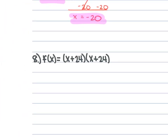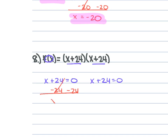For problem 8, we're given f(x) = (x + 24)(x + 24), which is 0 = (x + 24)². Since both parentheses are identical, we don't have to solve both — we know they give the same result. So we just solve one: subtract 24 from each side and x = −24. If they had opposite signs you'd solve both, but since they're identical, once is enough.